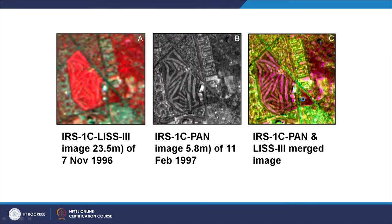The merged product bears both high spatial resolution and colour. At a broad zoom level you may not see the advantages, but zooming into the Delhi golf course makes the difference clear. In the FCC image at 23.5-meter resolution, individual holes of the golf course cannot be seen easily, whereas in the PAN image at 5.8-meter resolution they are clearly visible. In the merged image, the golf course holes are visible and the image is also coloured — spatial resolution from PAN, spectral resolution from LIS3.